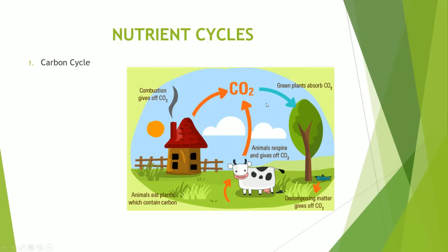The carbon dioxide is absorbed by plants to photosynthesize. The carbon inside the carbon dioxide gets transferred and transformed into chemical energy, whereby the carbon exists in nutrients like proteins and carbohydrates. When animals eat plants, they attain the carbon, and so the carbon gets cycled through. When animals die, they decompose, and decomposition of matter will also release carbon dioxide into the air. That's a full cycle of how carbon moves around.